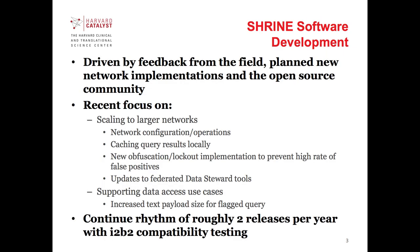SHRINE has been out there since 2009. As an open-source community project, we listen to our community and try to direct future SHRINE development based upon the needs within the community. We do that in conjunction with looking at planned new implementations. There's going to be a talk after the break about the ACT network, which is a large-scale implementation of SHRINE and I2B2. ACT has been a great example of an area that's driven SHRINE development, because the scale of the ACT network is significant — there are 21 sites in ACT now with a goal to have around 60.